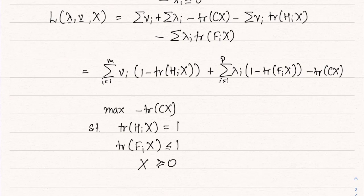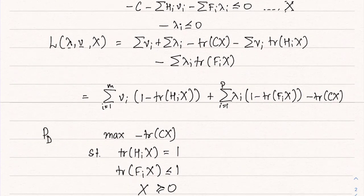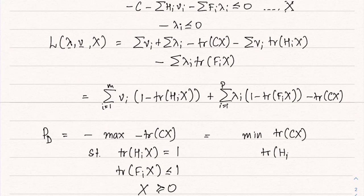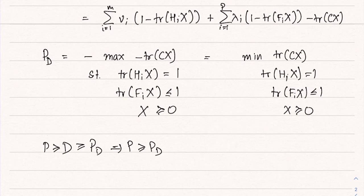This is our dual problem. Since d was defined as minus of this, we define p_d as minimization of trace(CX), subject to trace(H_i X) = 1, trace(F_i X) ≤ 1, and X ⪰ 0. This is the dual of the dual. We know p ≥ d by weak duality, and d ≥ p_d, so p ≥ p_d: the objective value here is less than in the original problem.